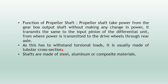The propeller shaft has to withstand torsional load. As we saw in previous lectures, two types of loads apply on a shaft: torsional load and bending moment. However, no bending moment acts on the propeller shaft; the shaft only needs to withstand torsional loads. It is usually made of a tubular cross-section, meaning it has an inside diameter and an outside diameter — generally the propeller shaft is a hollow shaft, not a solid shaft.